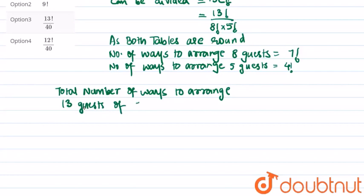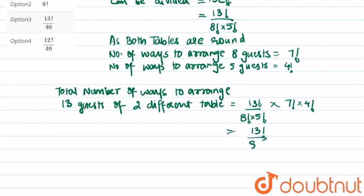on two different tables equals 13 factorial upon 8 factorial into 5 factorial into 7 factorial into 4 factorial, which gives 13 factorial upon 8 into 5, equal to 13 factorial upon 40.